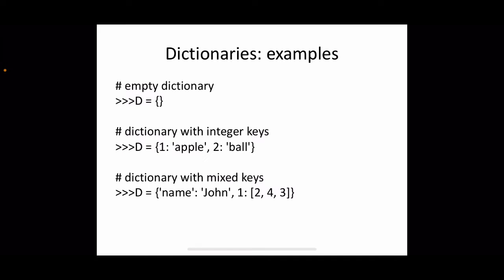Here are some examples of dictionaries. The first one creates an empty dictionary assigned to variable d. The second has two items: key 1 with value 'apple', and key 2 with value 'bold'. We can also have mixed types — the first item's key is a string and value is a string, and the second item's key is an integer and value is a list. This is also possible in a dictionary.